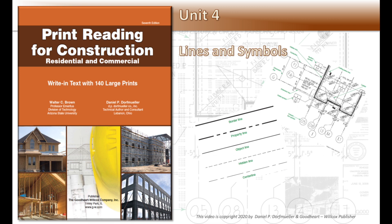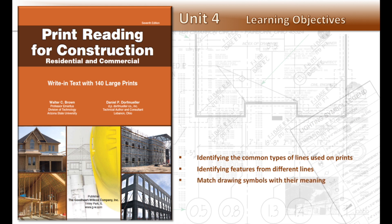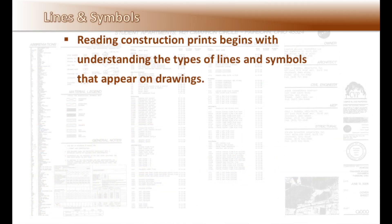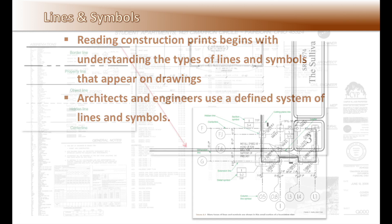Unit 4 Learning Objectives: identifying common types of lines used on prints, identifying features from different lines, and matching drawing symbols to their meaning. Reading construction prints begins with understanding the types of lines and symbols that appear on drawings. Architects and engineers use defined systems of lines and symbols.